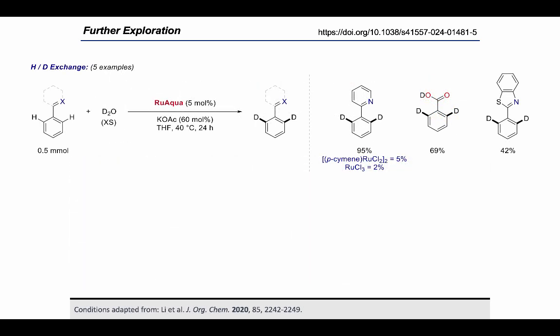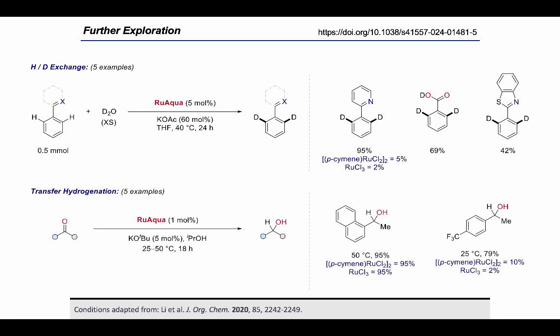One of the first reactions we expanded the use of RuAqua to was hydrogen-deuterium exchange using D2O as a deuterium source. This worked really well, giving the isotopologue in up to 95 percent yield. We were even able to use more challenging directing groups such as benzoic acid, which was transformed to the corresponding product in 69 percent yield.